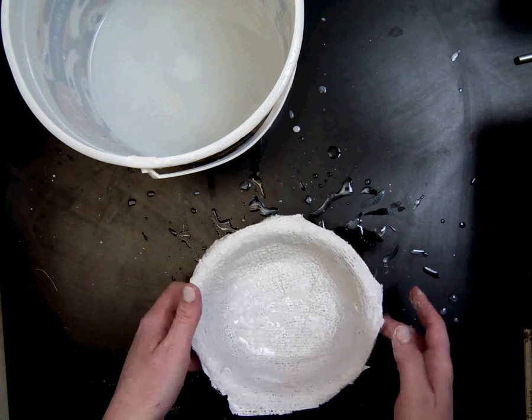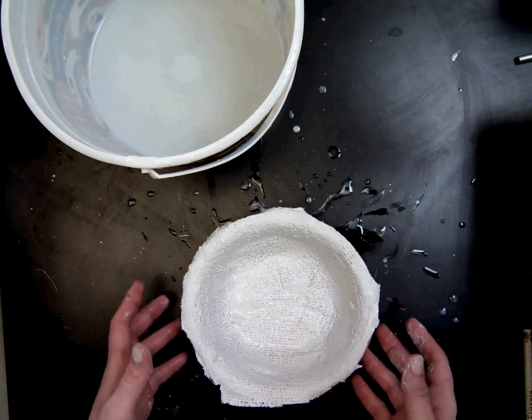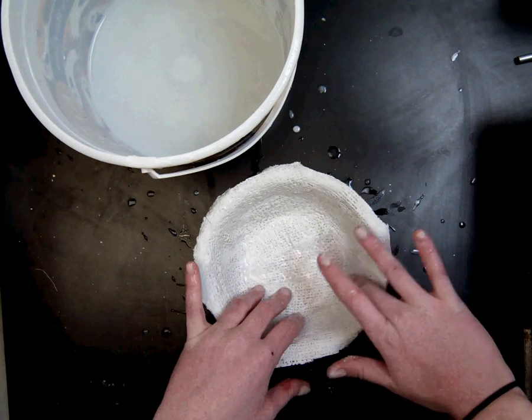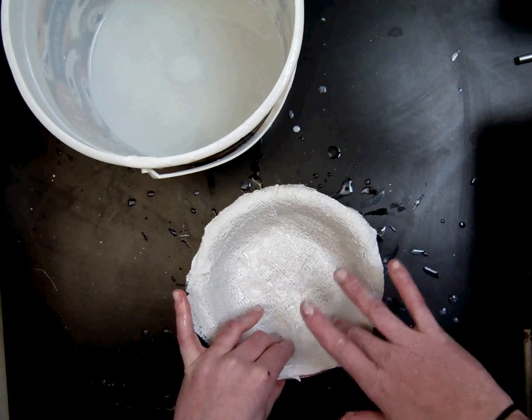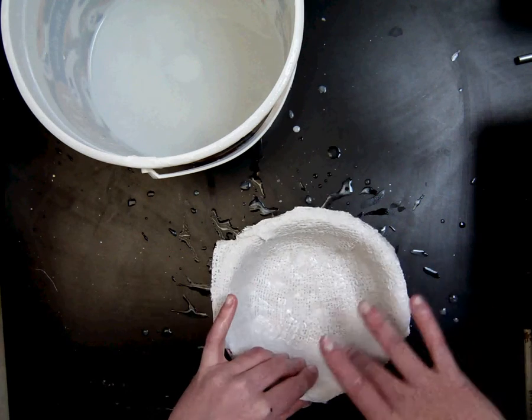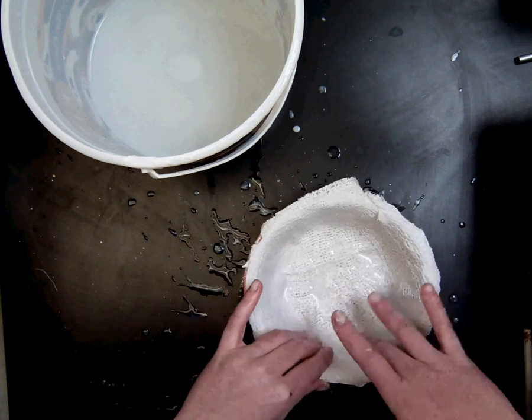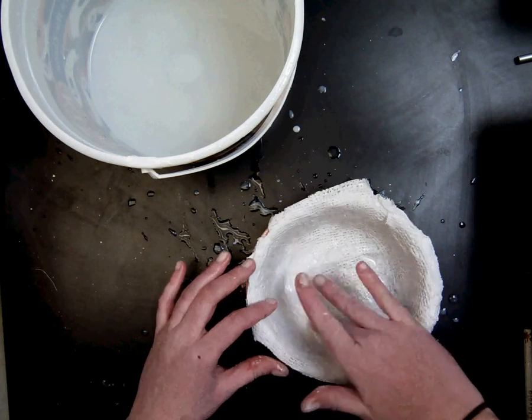Once you feel like you've gotten a good two layers on your entire bowl, you're going to take your wet finger and you're just going to rub and try to close all those little plaster holes, so that you cannot see the gauze anymore. It just looks plain white.